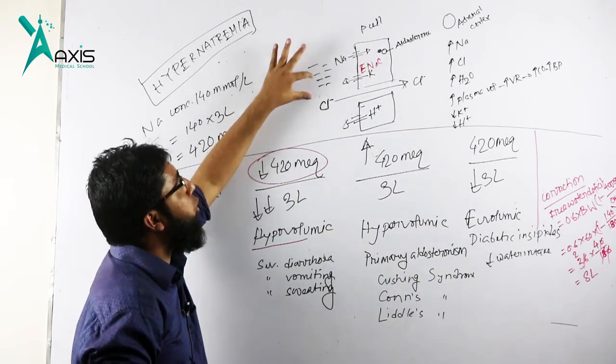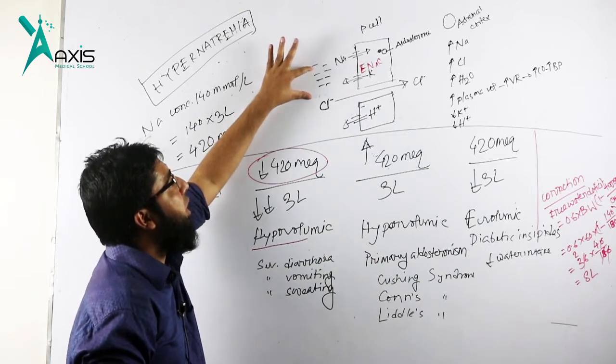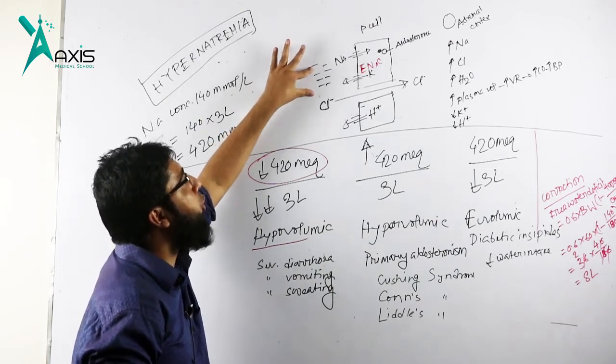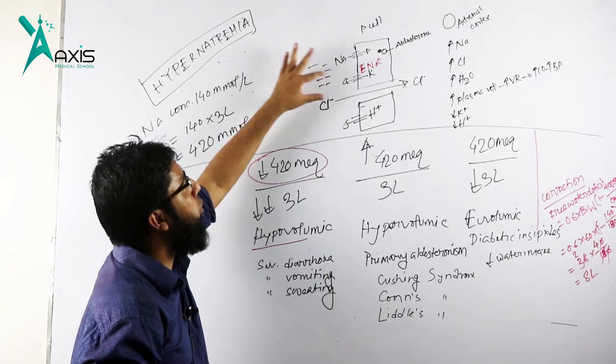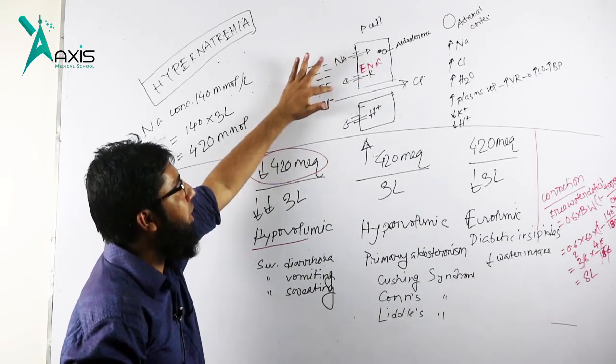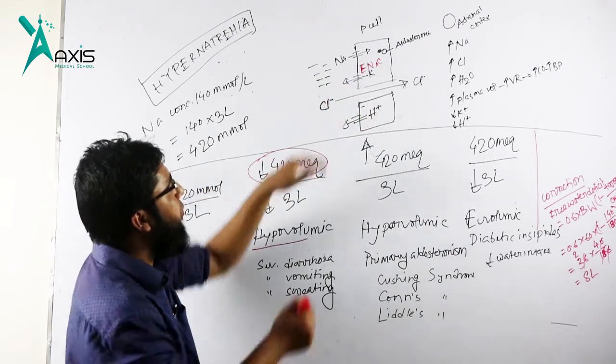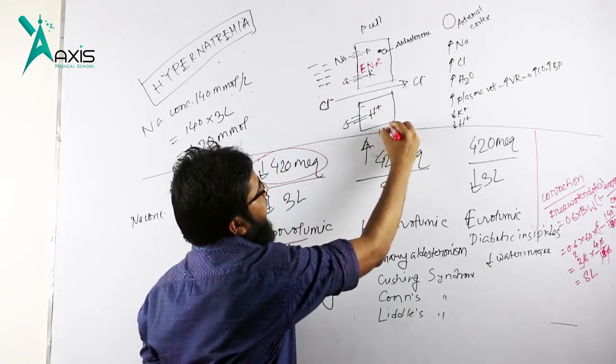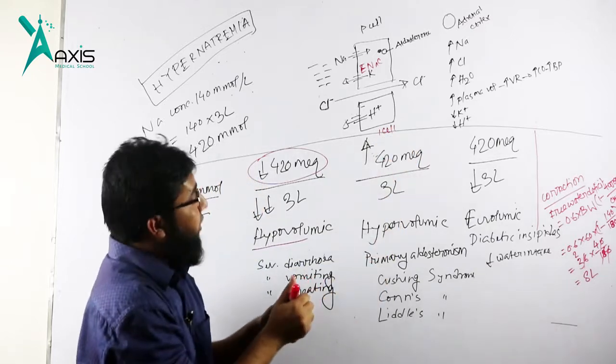The epithelial sodium channel is inserted into the principal cell of the late distal tubule. The sodium channel allows sodium to powerfully enter, and it creates luminal negativity.